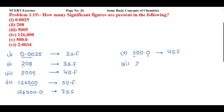The last one is 2.0034. There are zeros in between significant figures, so these zeros are also significant. How many significant figures are there? 1, 2, 3, 4, 5 — five significant figures.